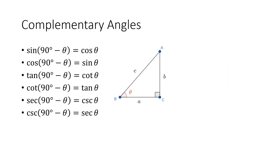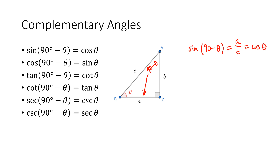Now because of this, the values of those trigonometric functions are going to be related. We've got our angle labeled theta in the lower left-hand corner of our triangle, and that means the angle at point A measures 90 minus theta. So what's the sine of 90 minus theta? In a right triangle, the sine of an angle is opposite over hypotenuse — that's SOHCAHTOA. For the 90 minus theta angle, the opposite side is little a, and the hypotenuse is c. But that's the cosine of angle theta.